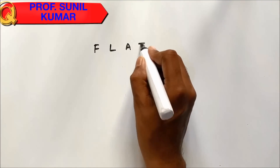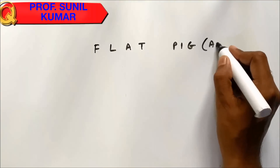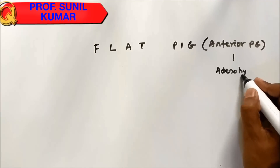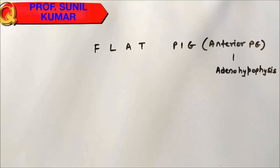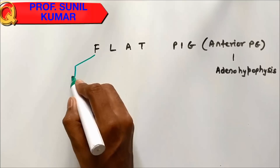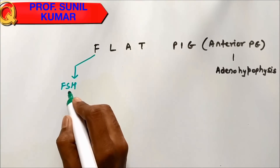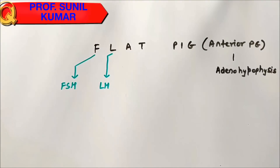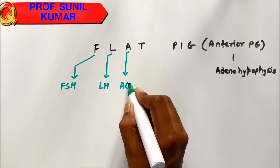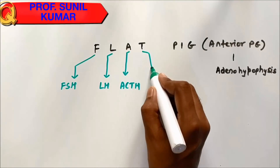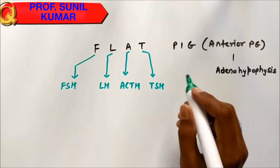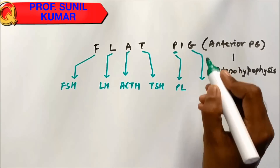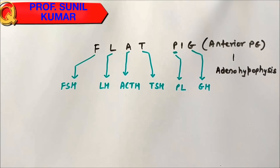Now let's understand FLATPIG — the hormones of the anterior pituitary gland, that is adenohypophysis. F stands for FSH, follicle stimulating hormone. L stands for LH, luteinizing hormone. A stands for ACTH, adrenocorticotropic hormone. T stands for TSH, thyroid stimulating hormone. P stands for prolactin. G stands for GH, that is growth hormone.